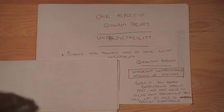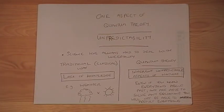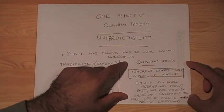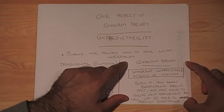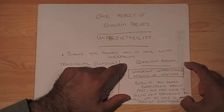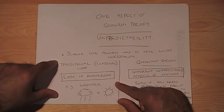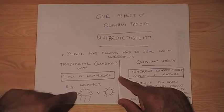And so the difference between quantum theory and classical theory is that quantum theory puts unpredictability in, it writes it in to the laws of physics. Whereas previously, unpredictability was only discussed as a side effect of our lack of knowledge.